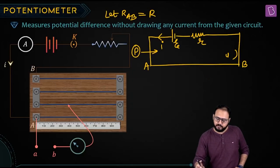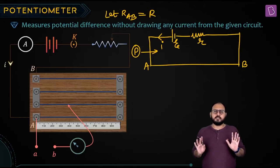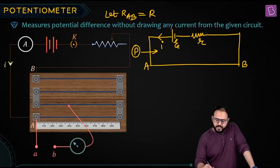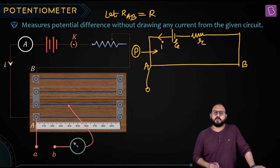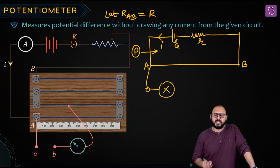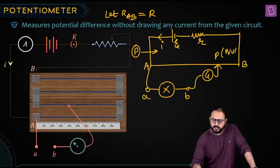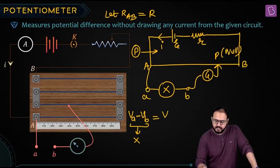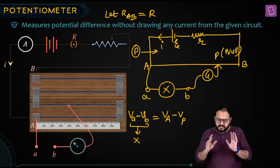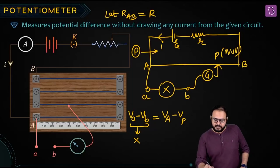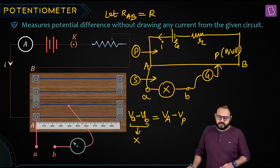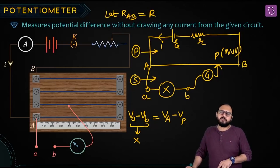One last time: the primary circuit is a constant. Between A and B, you take a portal out — open for connections. You connect something in the secondary circuit. The jockey finds a null point. At null deflection, VA minus V_small_b equals the PD across X — simply equal to VA minus VP. You find the PD between A and the null point using the primary circuit and equate it to the PD of the element in the secondary circuit. That's it.